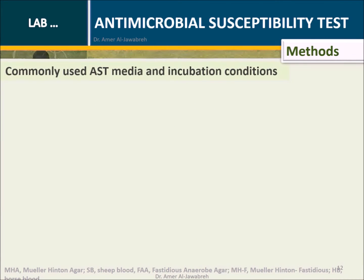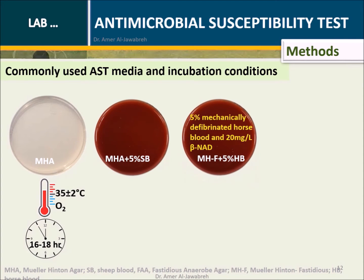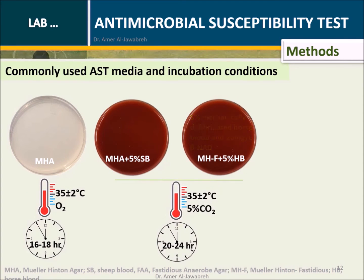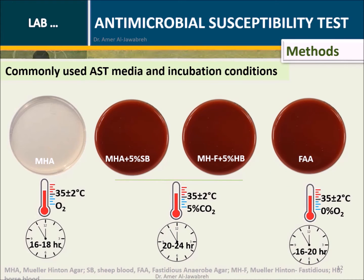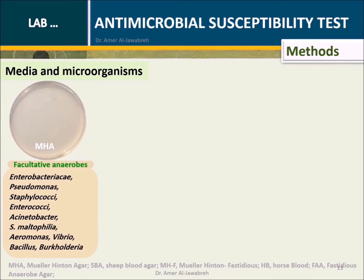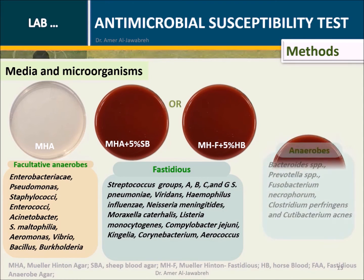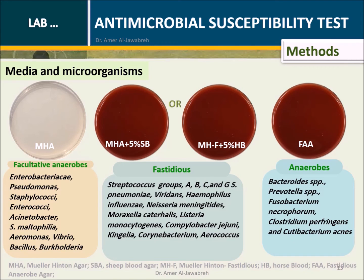Method — Commonly used AST media and incubation conditions: MHA; MHA with 5% sheep blood; MHA with 5% horse blood; and FAA. These use different atmospheric conditions and incubation periods. MHA is used for facultative anaerobes; MHA with 5% sheep blood or horse blood for fastidious microorganisms; and FAA for anaerobes.